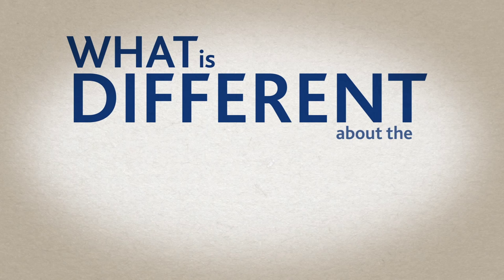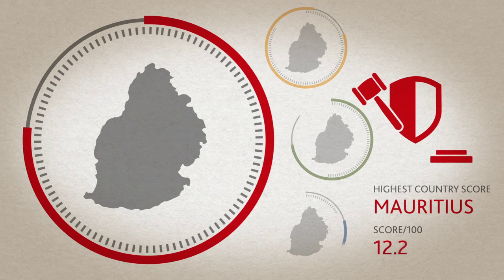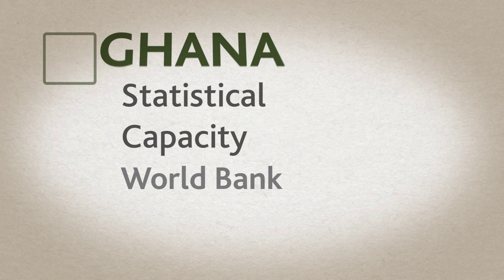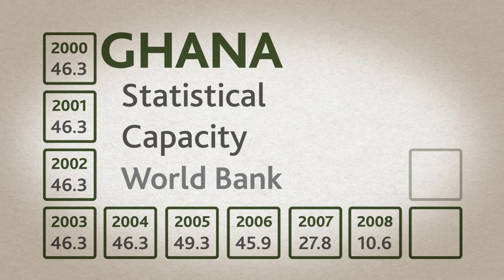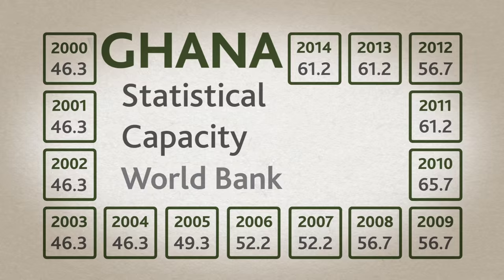The IIAG stands out over other governance indices because of its diversity. It combines data that covers the whole spectrum of governance in Africa, and every part of the IIAG is comparable across all 54 African countries since the year 2000. The process of calculating the IIAG is fully transparent.